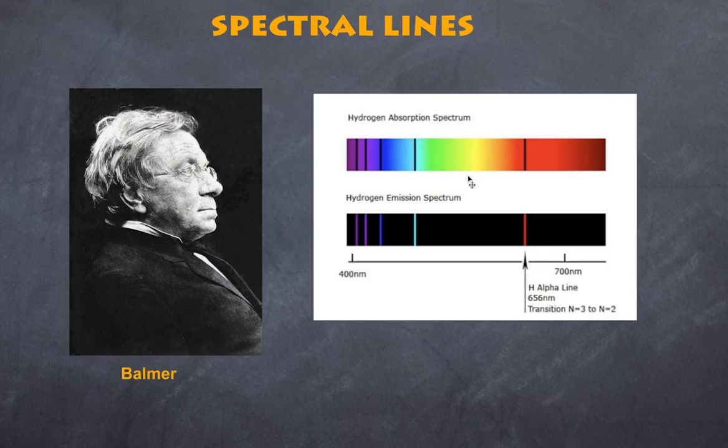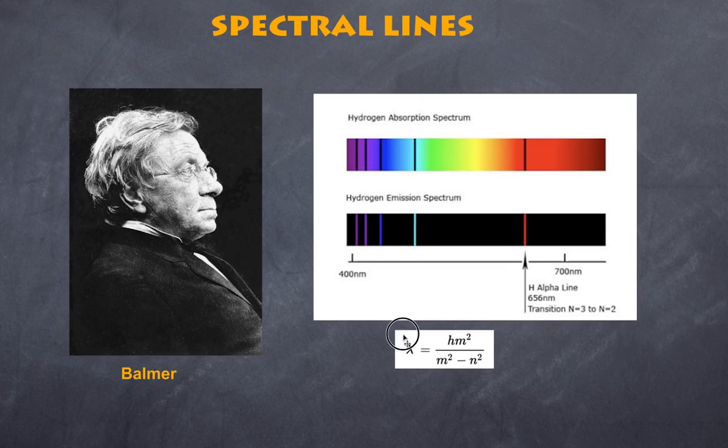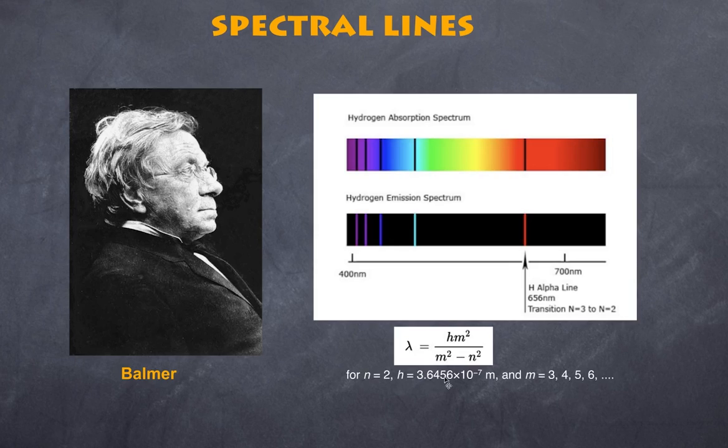Then, we come up to Balmer. And Balmer was a mathematician. However, he is not remembered for his mathematics work. He is remembered for his work on looking at spectral lines. And when he was examining the light passing through hydrogen, he was able to devise a mathematical relationship between the wavelengths and those lines. So, he is using some mathematical analysis. He came up with a formula. And he said that lambda was equal to h m squared over m squared minus n squared.